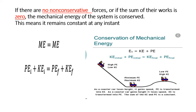This means the mechanical energy remains constant at any time. So, mechanical energy initial equals mechanical energy final. In other words, the mechanical energy at each instant has a constant value. The kinetic energy and the potential energy of the system may vary, but their summation, which is the mechanical energy, is always constant in this case.